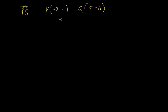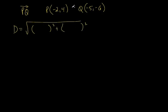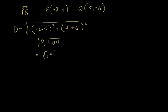We've got to find the magnitude and the direction. The magnitude is the length of this line. If I've got two points, the distance formula finds the length — it's just like the Pythagorean theorem. So: negative 2 minus negative 5 gives negative 2 plus 5, which is 3. And 4 minus negative 6 is 4 plus 6, which is 10. That's 3 squared plus 10 squared — 9 plus 100 — take the square root and get the square root of 109, which is approximately 10.4.